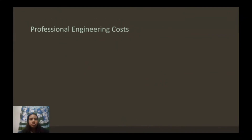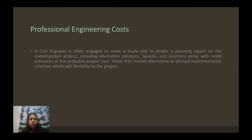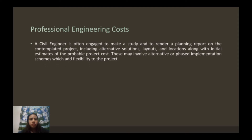Professional engineering cost: a civil engineer is often engaged to make a study and to render a planning report on the contemplated project, including alternative solutions, layouts, and locations, along with initial estimates of the probable project cost. This may involve alternative or phased implementation schemes which add flexibility to the project.